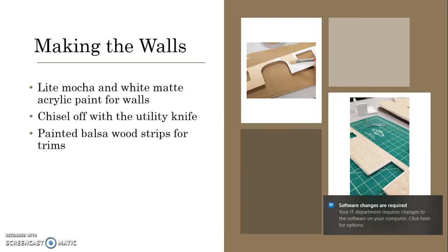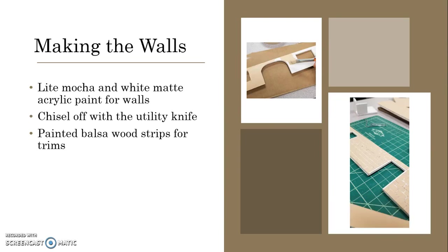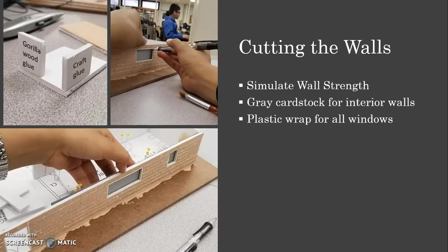What I finally went with was a mixture of light mocha and white matte acrylic paint, which I would then chisel off with a utility knife to create the brick look. After the walls were painted and chiseled, I painted the balsa wood strips white for all the door and window trims, then glued them on with Gorilla Wood Glue. After painting all the walls, I set them all up with pins holding them in place to assure again that all were the correct dimensions. Before gluing them down, I simulated the wall's foundation strength with craft glue and Gorilla Wood Glue.